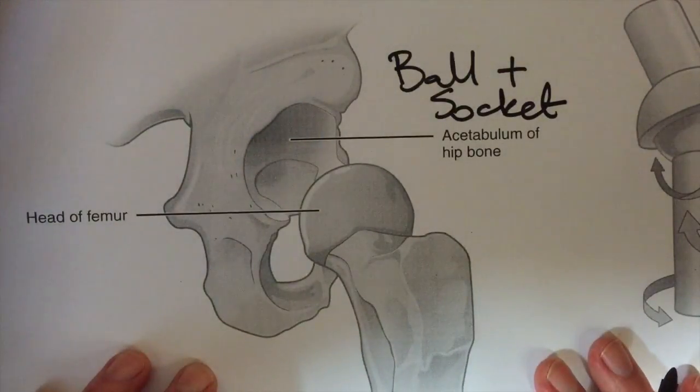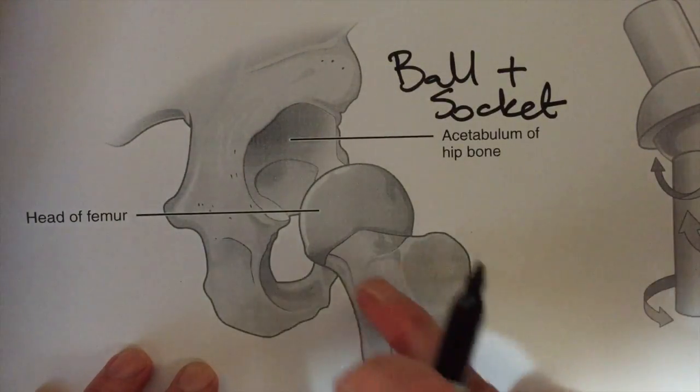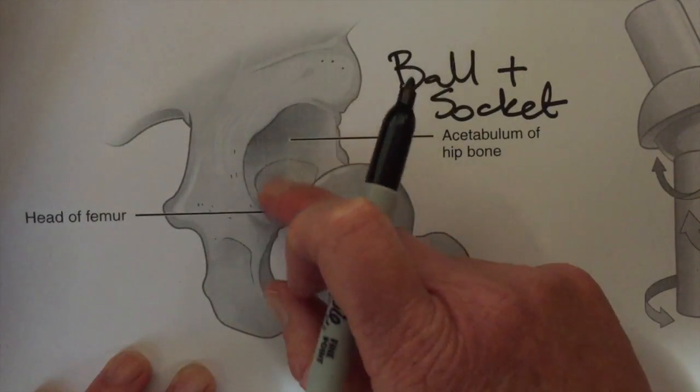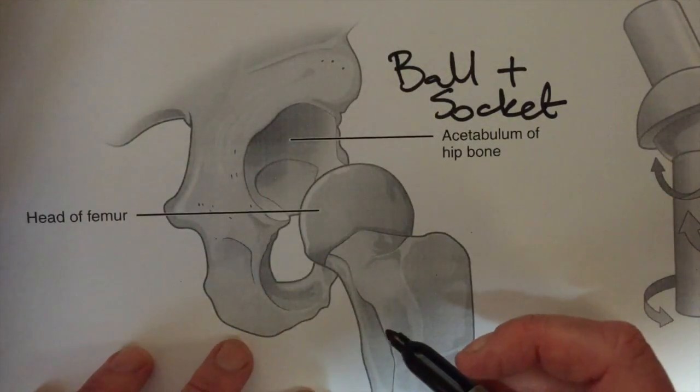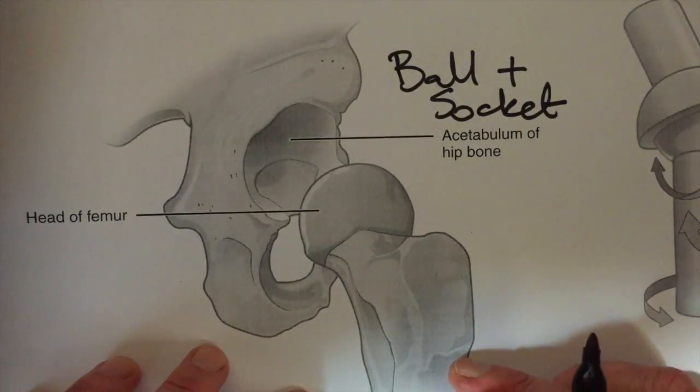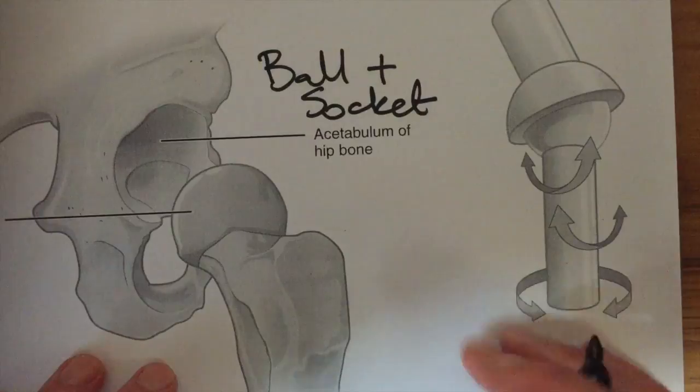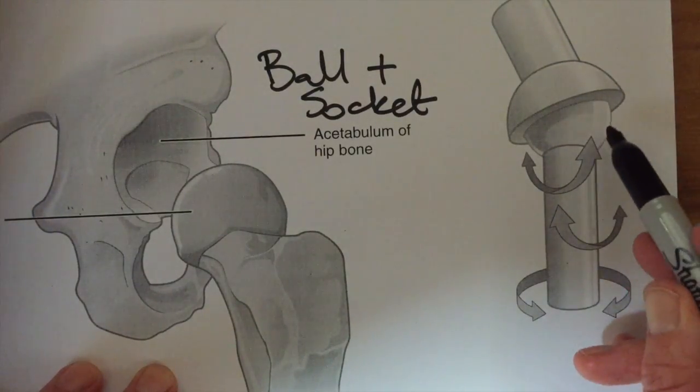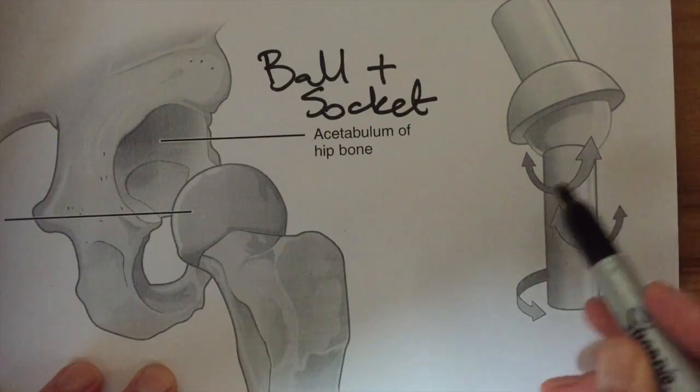There's another ball and socket joint in the body that looks a bit different because the socket is not nearly as deep, but the shoulder is also a ball and socket joint. What you can see here is that it allows all sorts of movement.